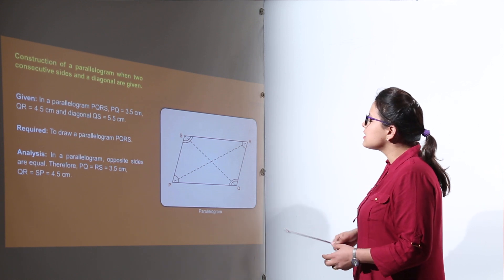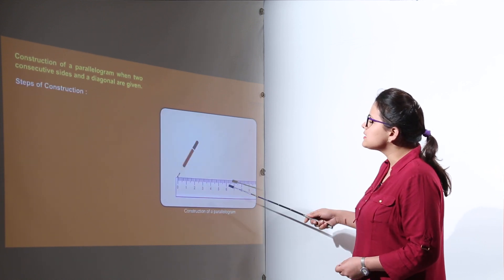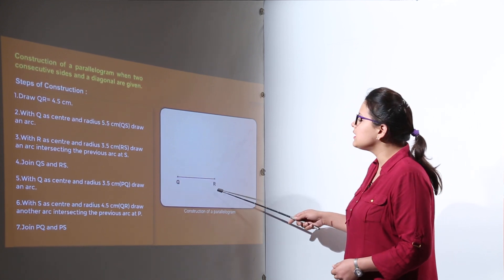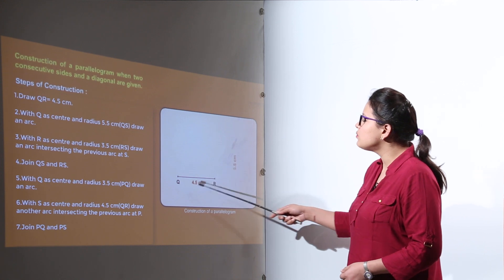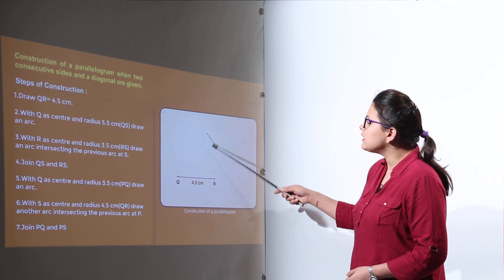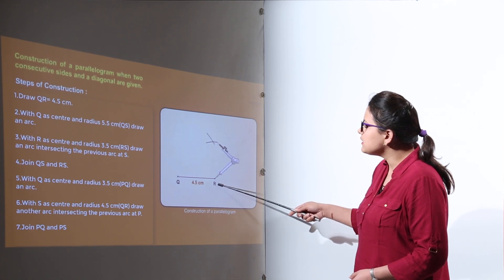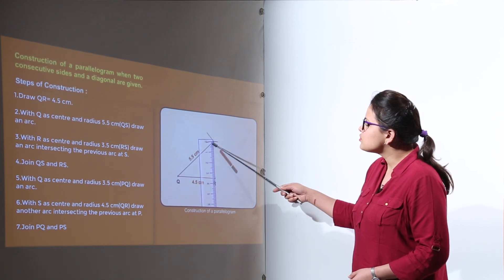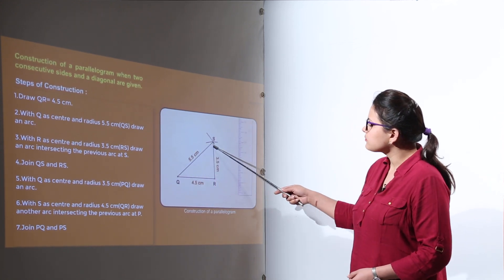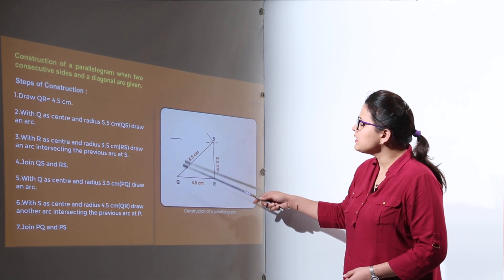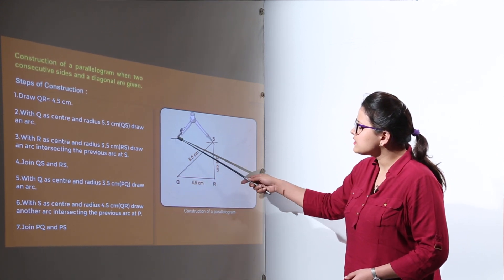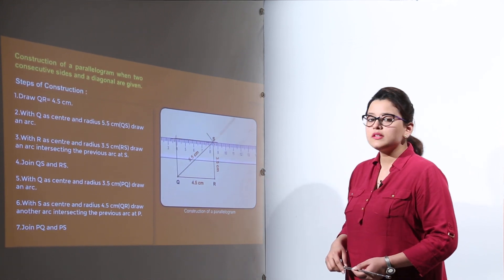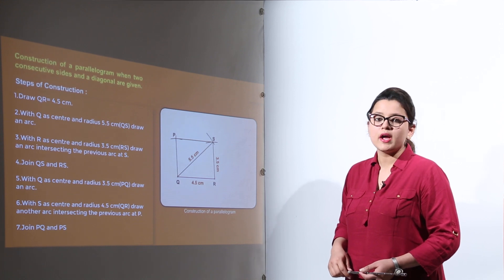For the steps of construction we start with the base side. We can take any of the four sides as base; here we take QR equal to 4.5. With Q as center and radius 5.5 we make an arc. With R as center and radius 3.5 we intersect the previous arc and name the point S. Join QS and SR. For point P, with Q as center and radius 3.5, and with S as center and radius 4.5, we get point P. Join all four points together to get the required parallelogram.